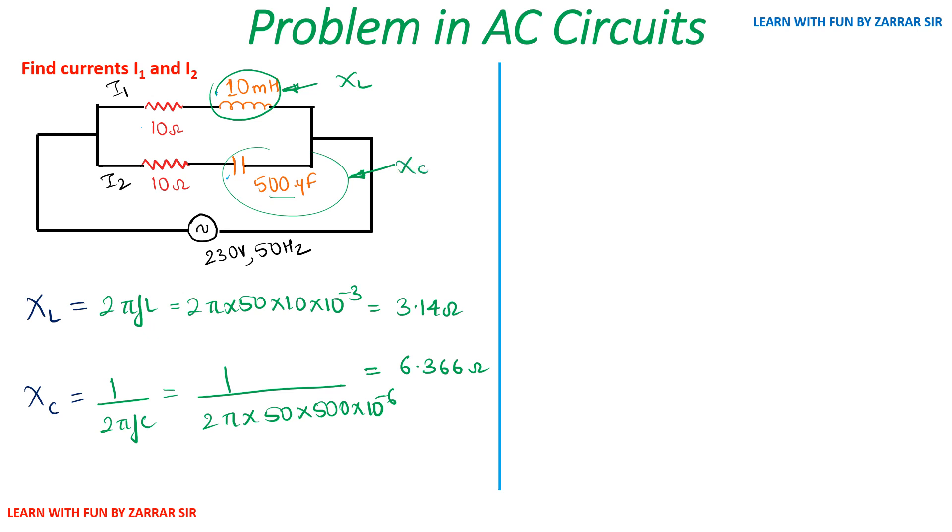Now we'll be understanding something very interesting, which will be my Z1. I'm trying to calculate impedance of this small network. My Z1 is 10, which is resistance, plus—we'll be converting into complex form—j. Don't write this 10 millihenry; be cautious. We've already calculated this 10 millihenry as XL, and the value of XL is 2πfL, which is 3.14. So I'll write 10 + j3.14.